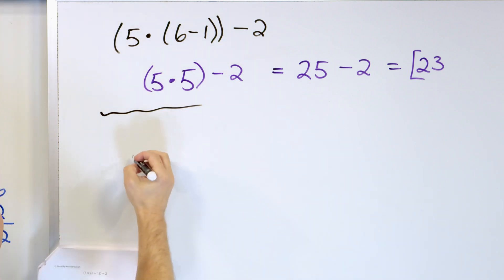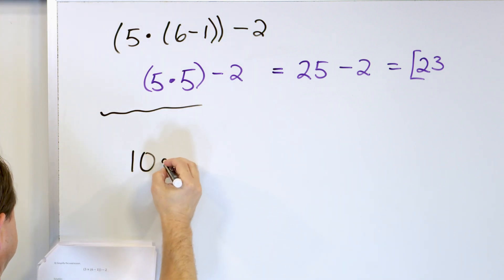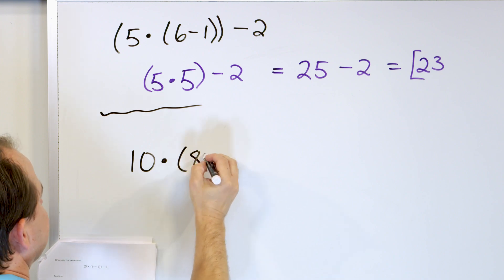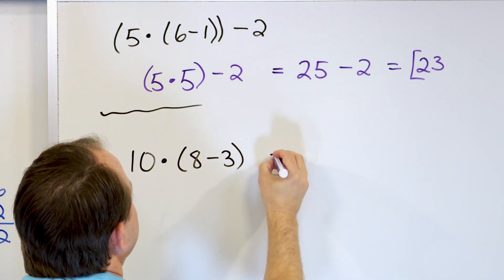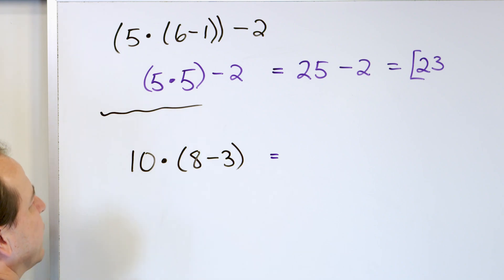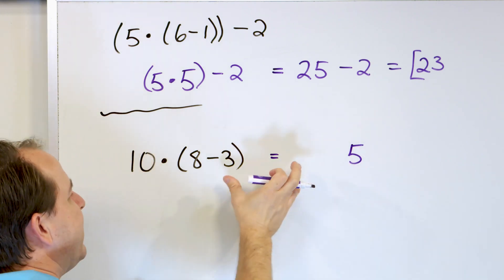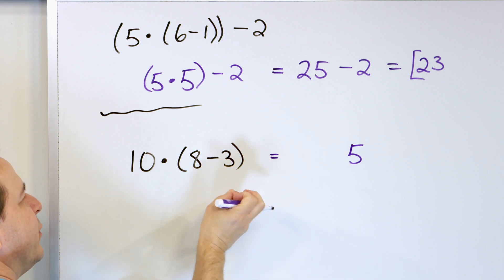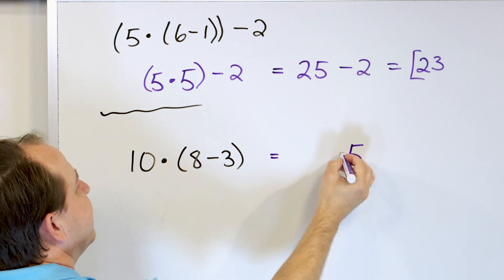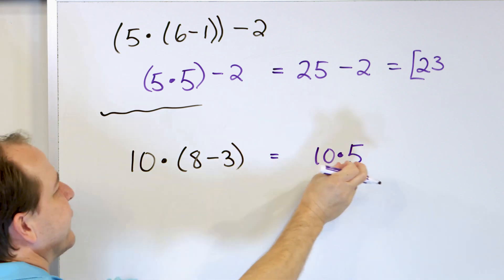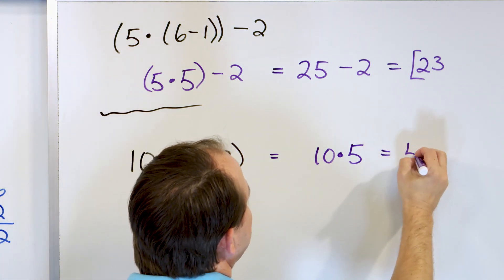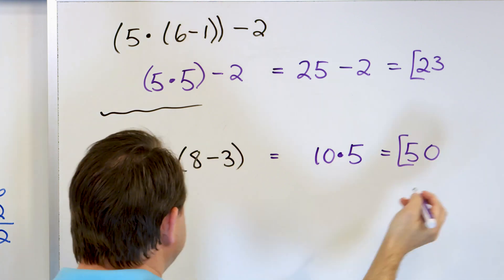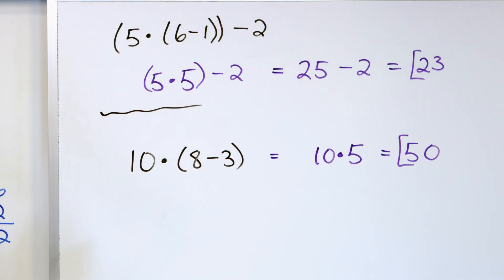Making good progress. Let's take a look at 10 times, open parentheses, 8 minus 3. Always do what's in the parentheses first. 8 minus 3 is going to be 5. We put a 5 there and drop the parentheses, but we still have to multiply by 10. 10 times 5 is 50. So 50 is the final answer to that problem.